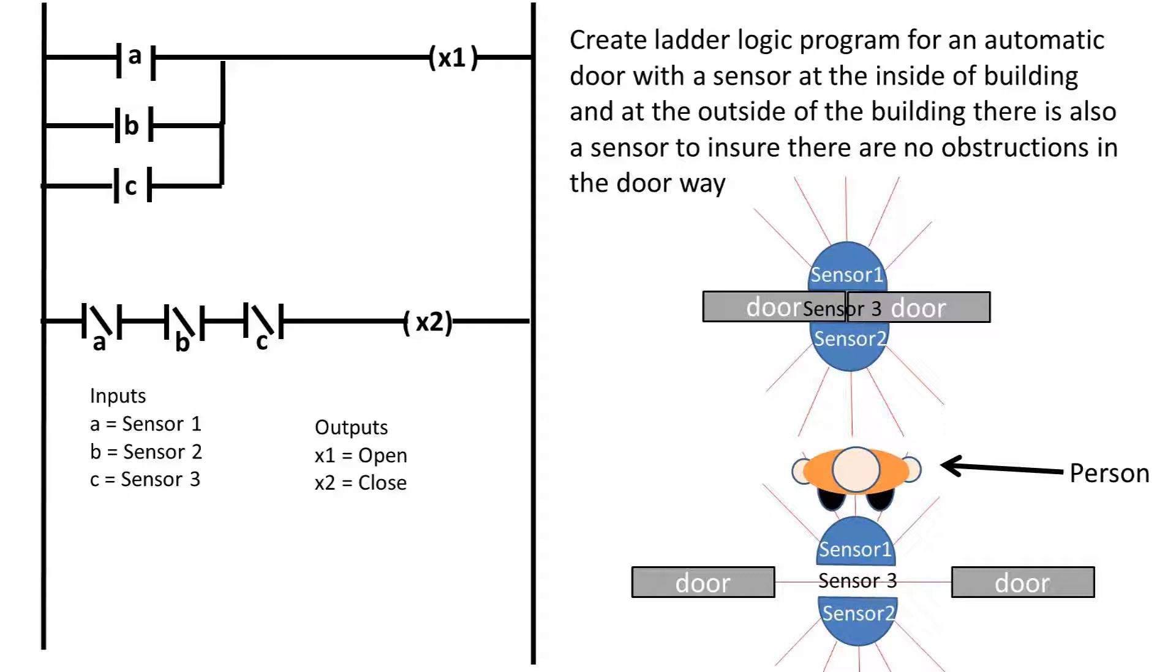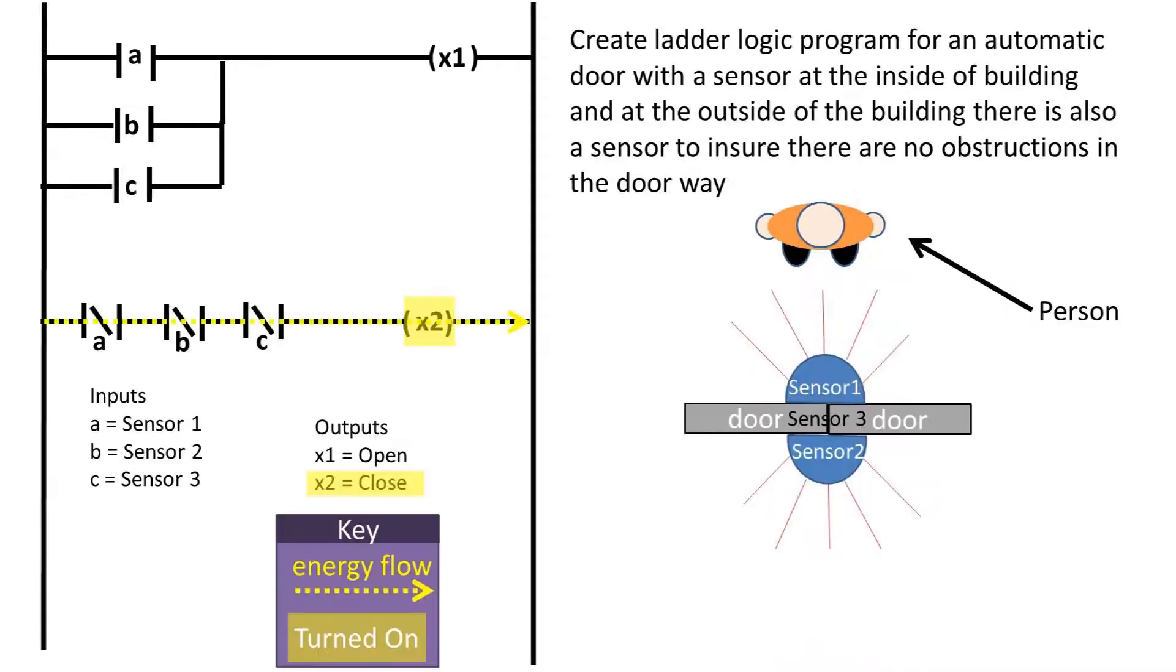This is stating that if there is no person or object in the way of the sensors, then the connection will be made to the coil to close the door. If any of the sensors report a true or on signal, then the normally closed contact opens and breaks the circuit, and the coil is not powered on.